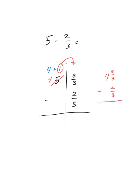So three-thirds minus two-thirds is one-third, and four minus nothing is four. So my answer is four and one-third.